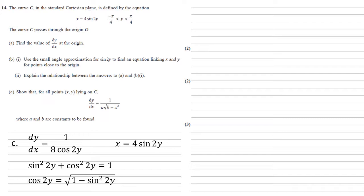So rearranging this, we get that cos 2y equals the square root of 1 minus sine squared 2y. So replacing the cos 2y in our dy by dx formula gives us 1 over 8 times the square root of 1 minus sine squared 2y.